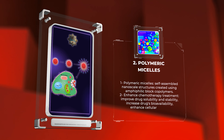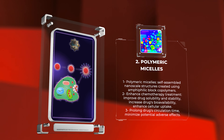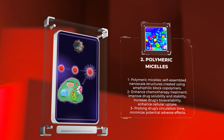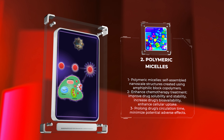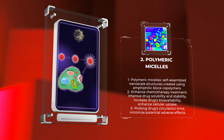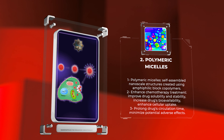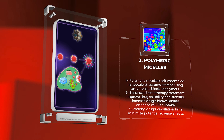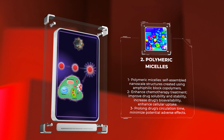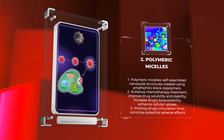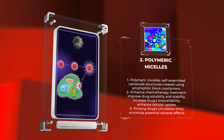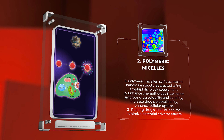Polymeric micelles, or self-assembled nanoscale structures, are created using amphiphilic block copolymers, which contain both hydrophilic and hydrophobic segments. These copolymers arrange themselves into a core-shell structure. Polymeric micelles are valuable in enhancing chemotherapy treatment as they improve drug solubility and stability, increase the drug's bioavailability, and enhance cellular uptake. Moreover, they also prolong the drug's circulation time in the body and minimize potential adverse effects. Overall, polymeric micelles hold great potential as a tool for improving the effectiveness of chemotherapy.